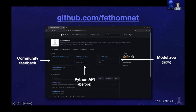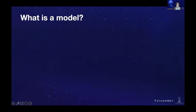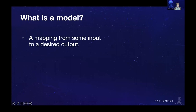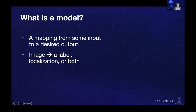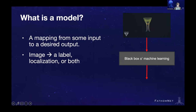Before we dig into what's on there right now, I'm just going to talk very briefly about what we mean by a model. Very generally, we're talking about some sort of mathematical mapping between an input and a desired output. In the context of FathomNet, we take an image and what we want out of it is a label, a localization, or both. For example, we start with this lovely image of a Gina, this jellyfish, plug it into our machine learning black box, and out the other end pops its name, a Gina, or alternatively a bounding box with the annotation.